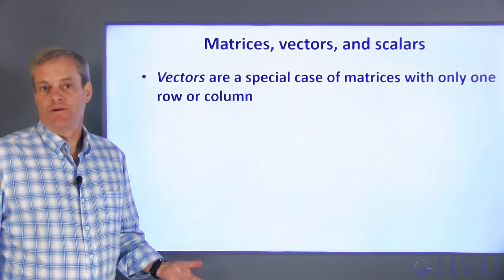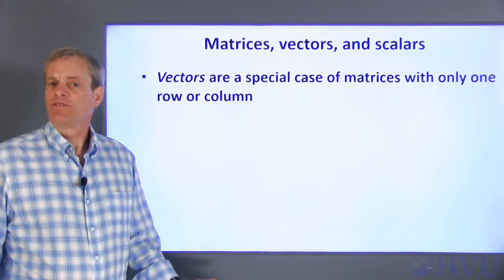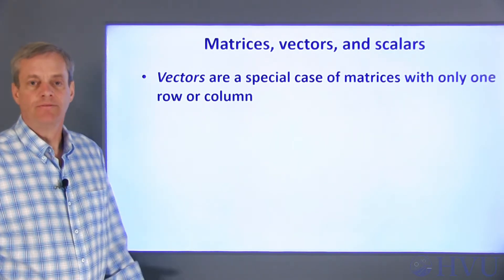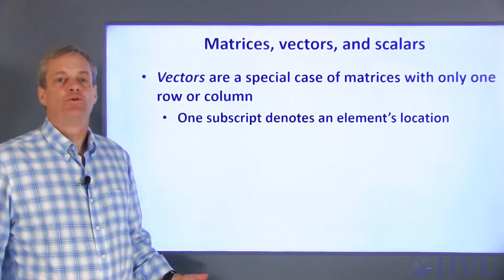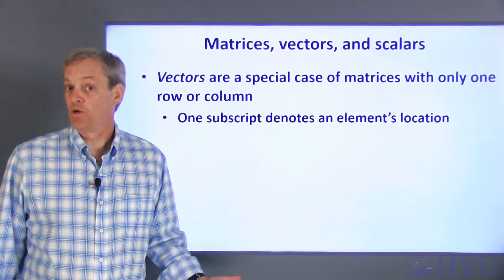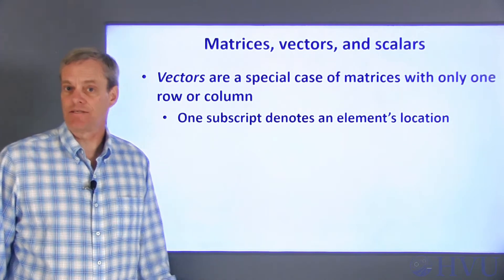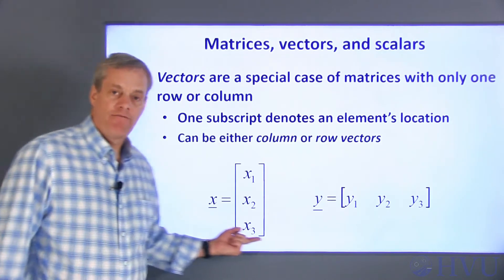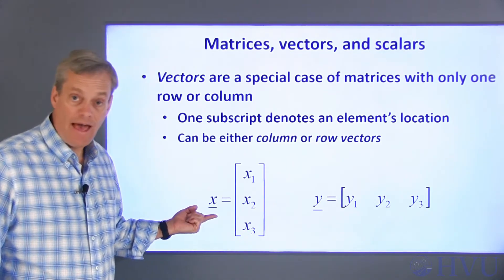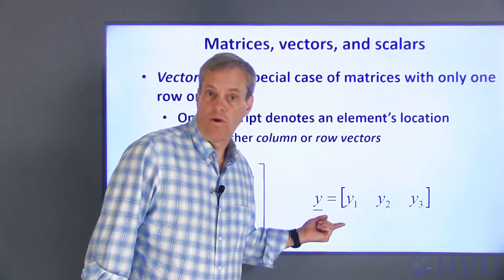Vectors are one-dimensional arrays, with a single row or column, so they are really just a list of numbers. Elements of a vector are usually specified by a single subscript, which provides the location of the element in the list. Vectors can have either a single column, like X, or a single row, like Y.